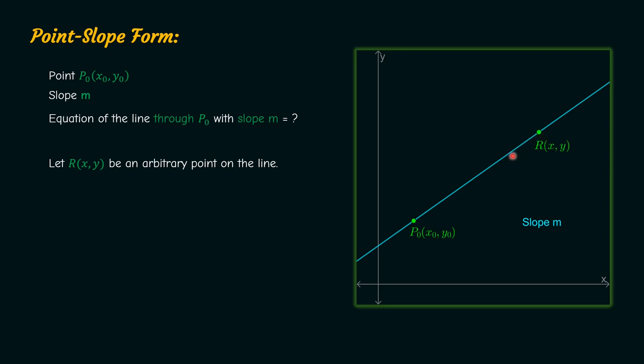Now when two points are given we know that the slope is nothing but the change in the y coordinate by the change in the x coordinate. So therefore slope m is equal to change in the y coordinate, which is nothing but y minus y0 by x minus x0. Now this can also be written as y minus y0 is equal to m into x minus x0.